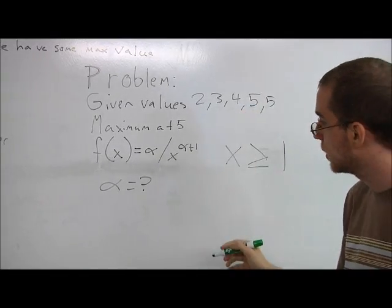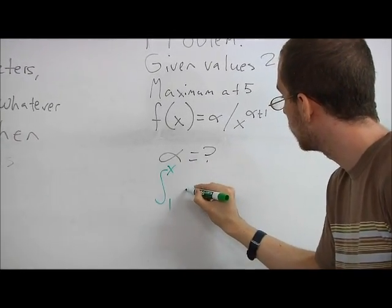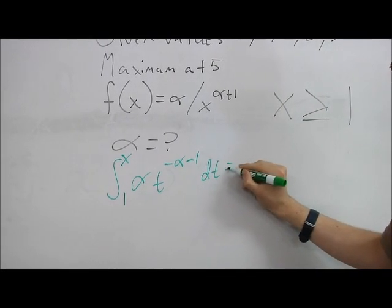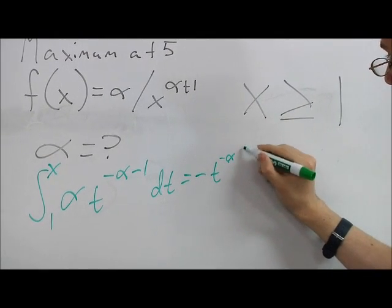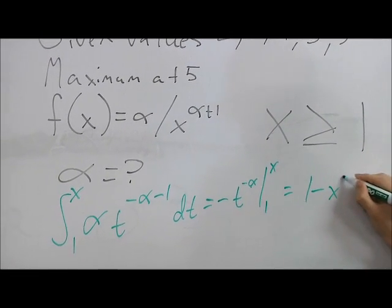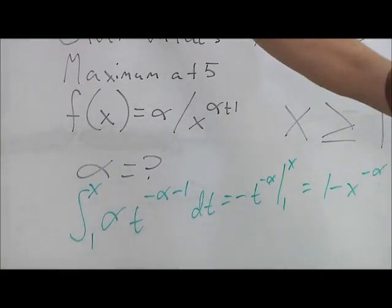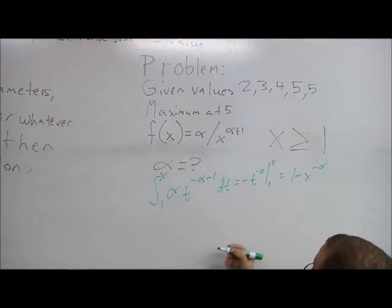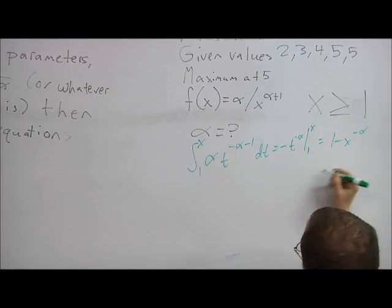So integral of 1 to x of alpha times t to the negative alpha minus 1 dt, which is pretty simple. We're going to solve. It's just going to be negative t to the negative alpha from 1 to x, which is 1 minus x to the negative alpha. So then, as I mentioned here, it's 1 minus F of x for max. So it'll just be 1 minus this, which is just equal to that.